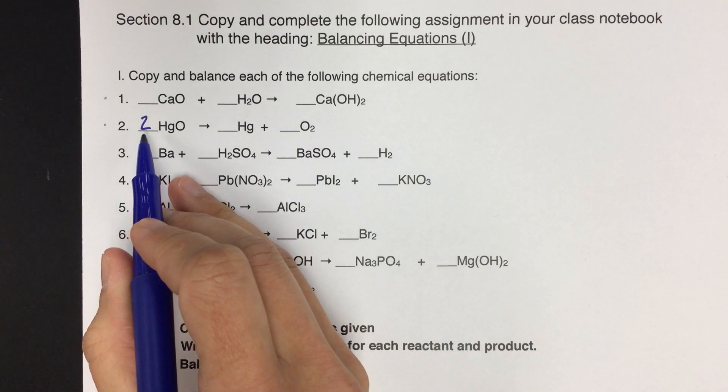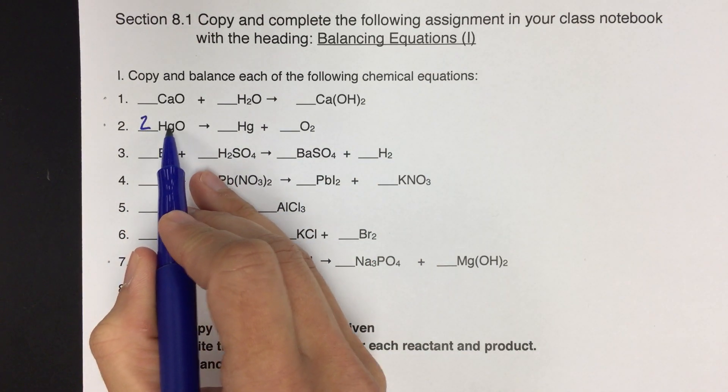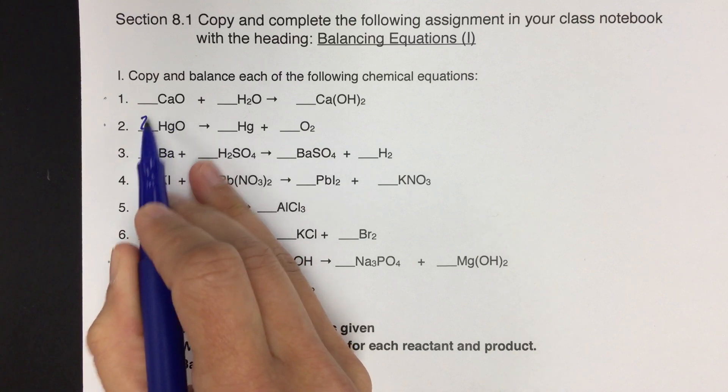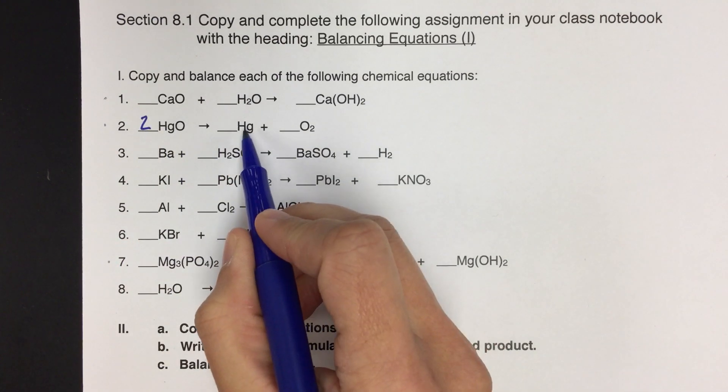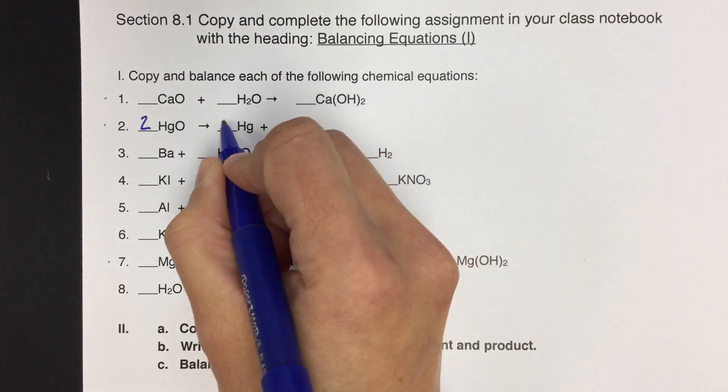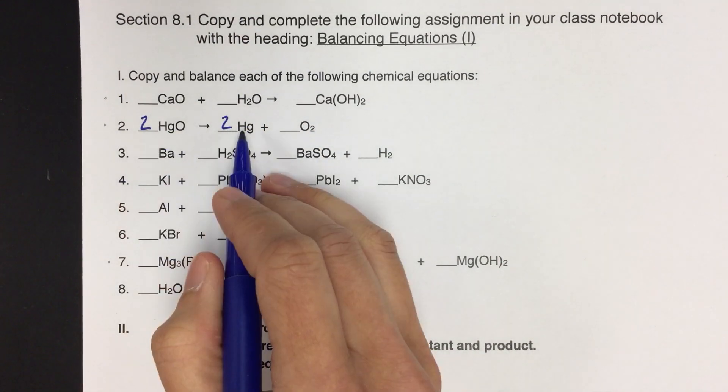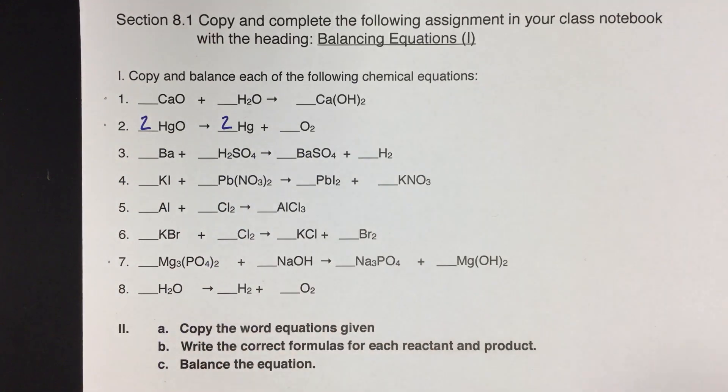So by putting a two there now, what we've done is we've also changed the number of mercuries here. So by putting the two in front, it's also going to have an effect on this Hg. Now we have two Hgs. So we need to balance that on this side by adding a two here. So now the Hgs are balanced, the Os are balanced, and now this reaction is also balanced. Okay, so you'll see it's a lot of this back and forth.